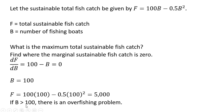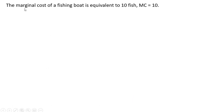If the number of boats exceeds 100, there will be an overfishing problem. Let's say that the marginal cost of a fishing boat is equivalent to 10 fish, or MC equals 10.